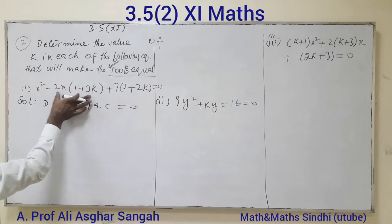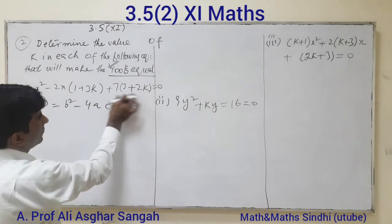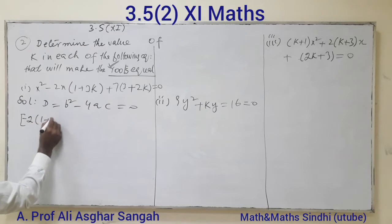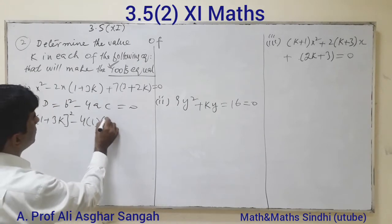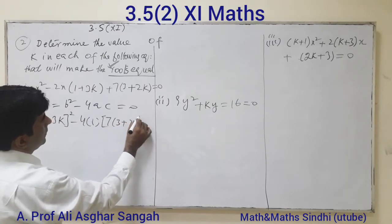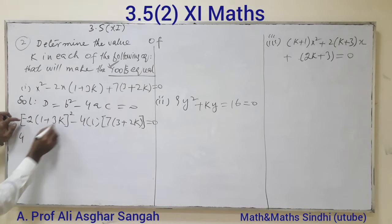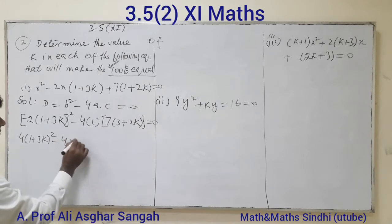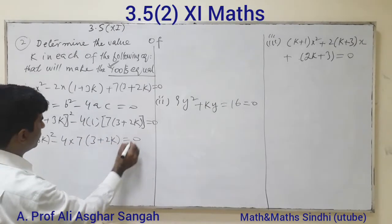Taking the values: a equals 1, b equals 1 plus 3K, and c equals 7 plus 2K. Putting these in the discriminant formula: (1 plus 3K) squared minus 4 times 1 times (7 plus 2K) equals zero. Expanding: 1 plus 3K whole squared minus 4 into 7 and 3 plus 2K equals zero.